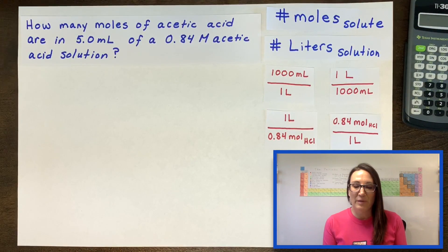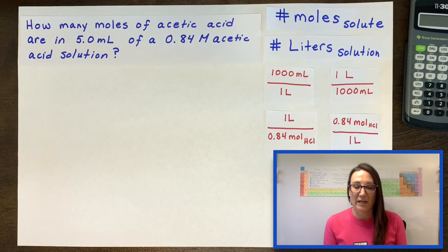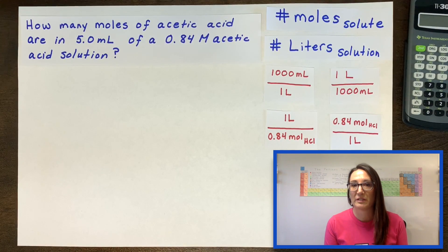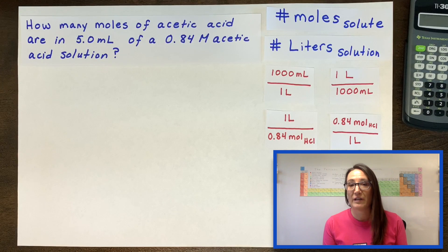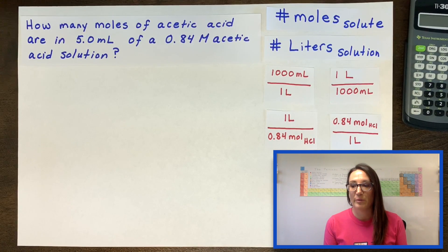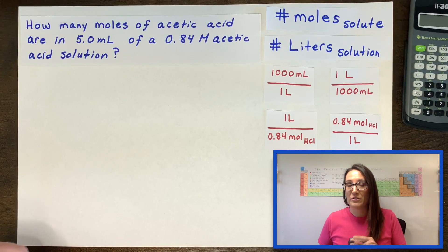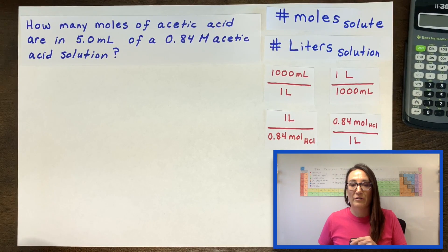This is the fifth problem. How many moles of acetic acid are in five milliliters of 0.84 molar acetic acid solution? That just means acetic acid was dissolved in water. In fact, this is the molarity of vinegar that you have probably in your house. So the easiest way to do this problem, maybe even give it a shot first. If you want, pause the video and try it on your own.